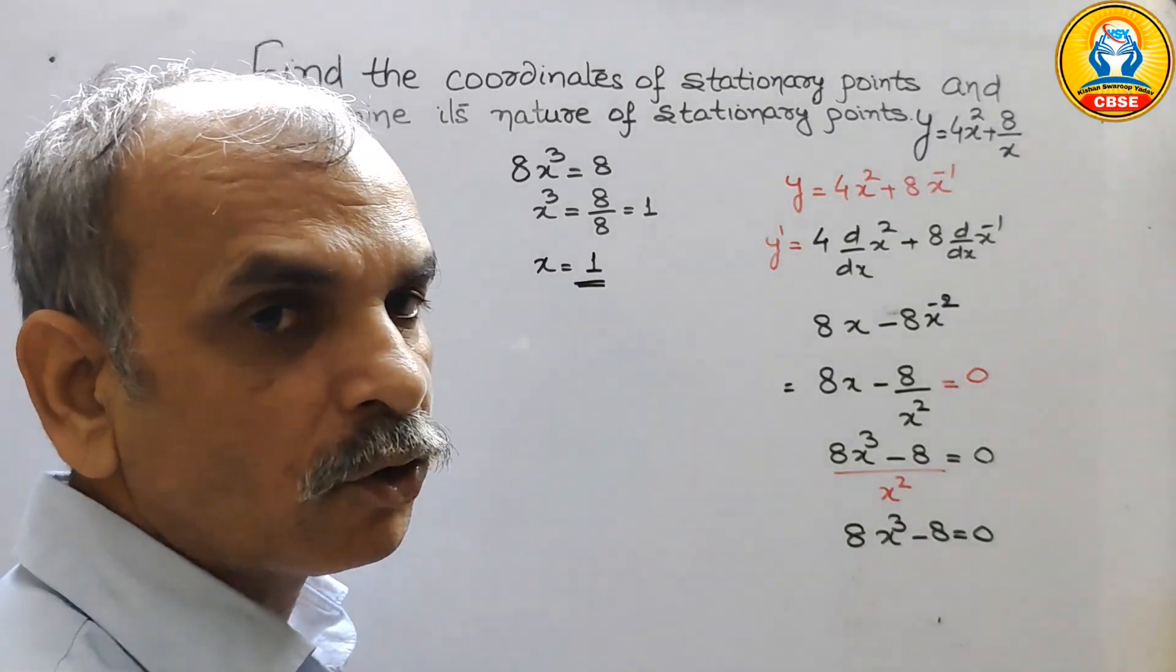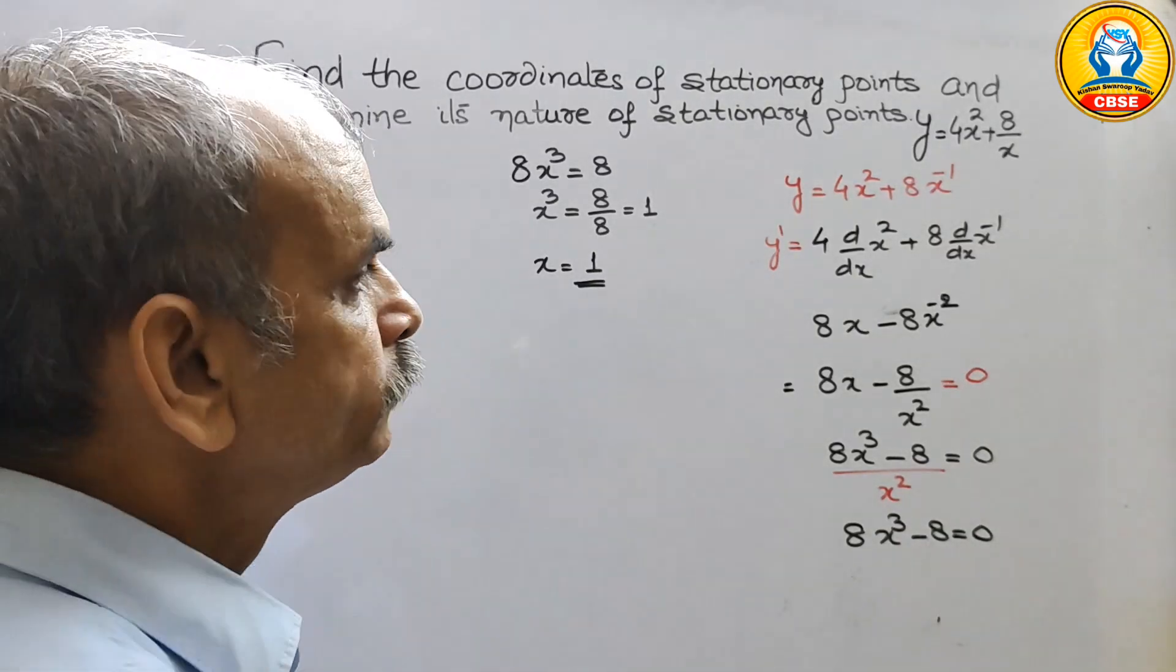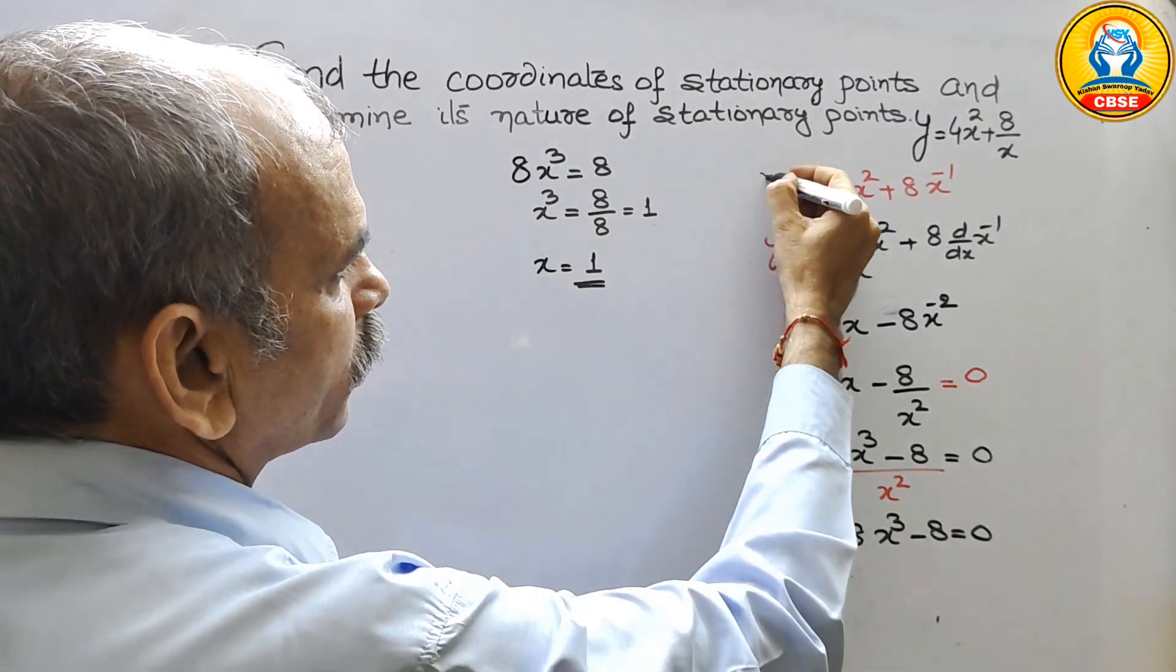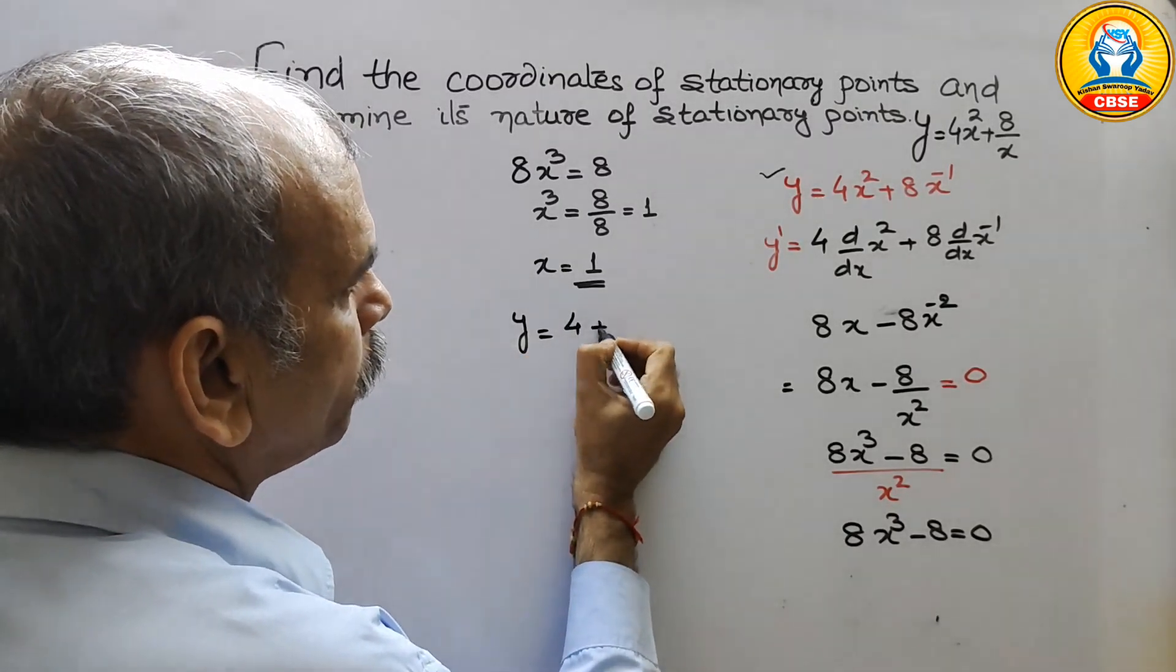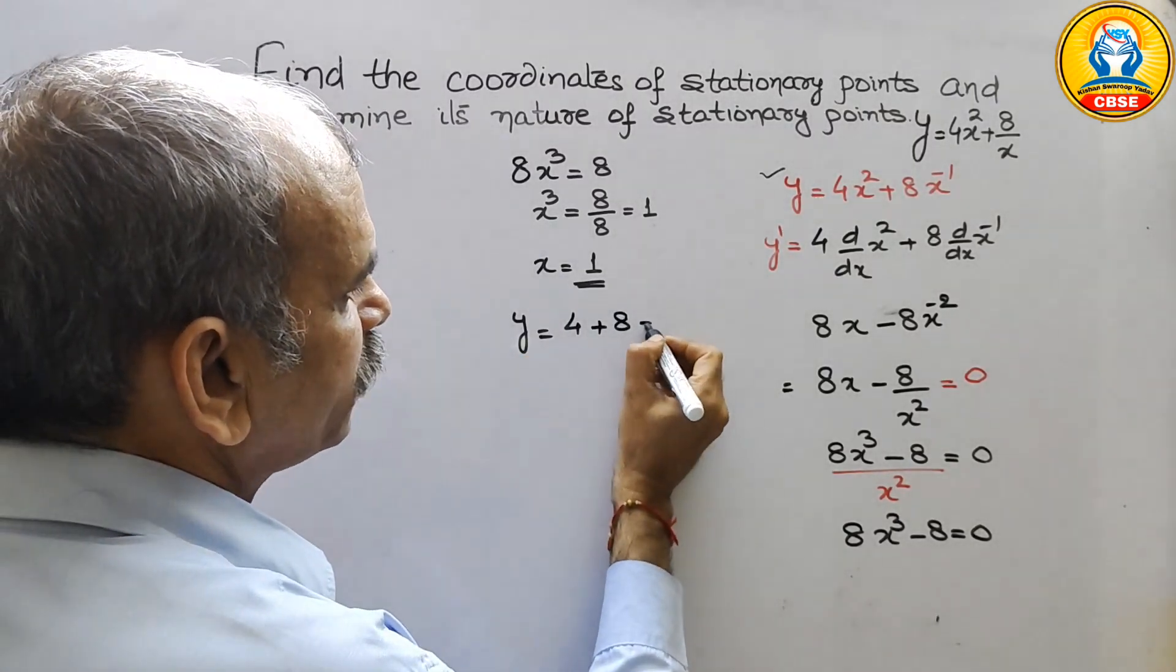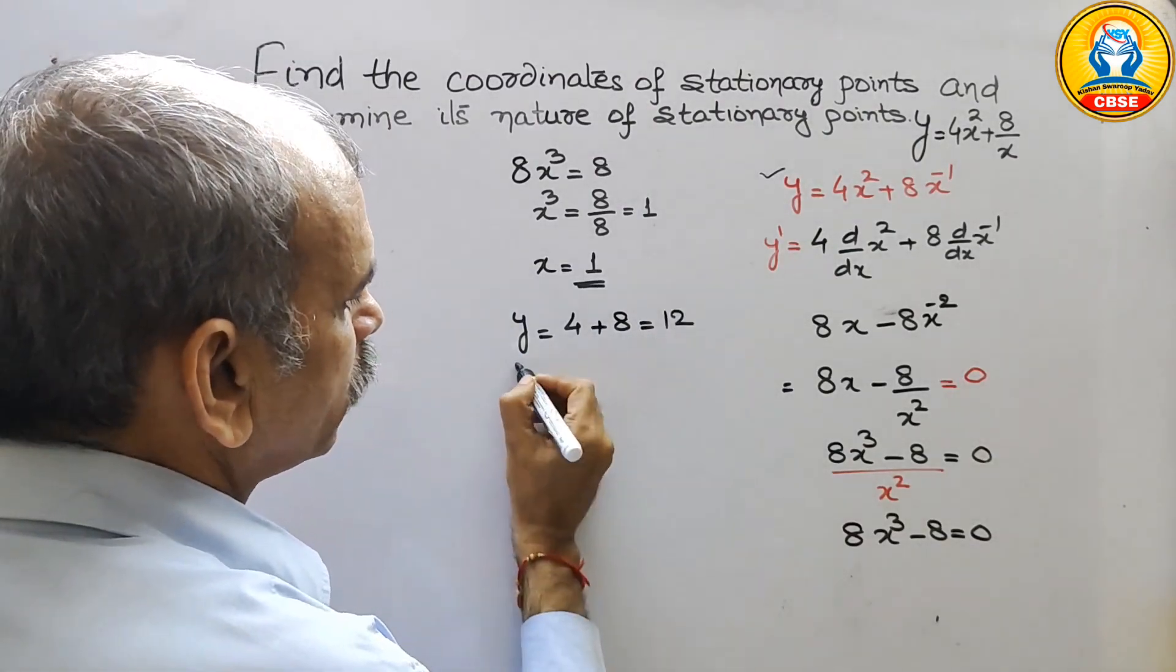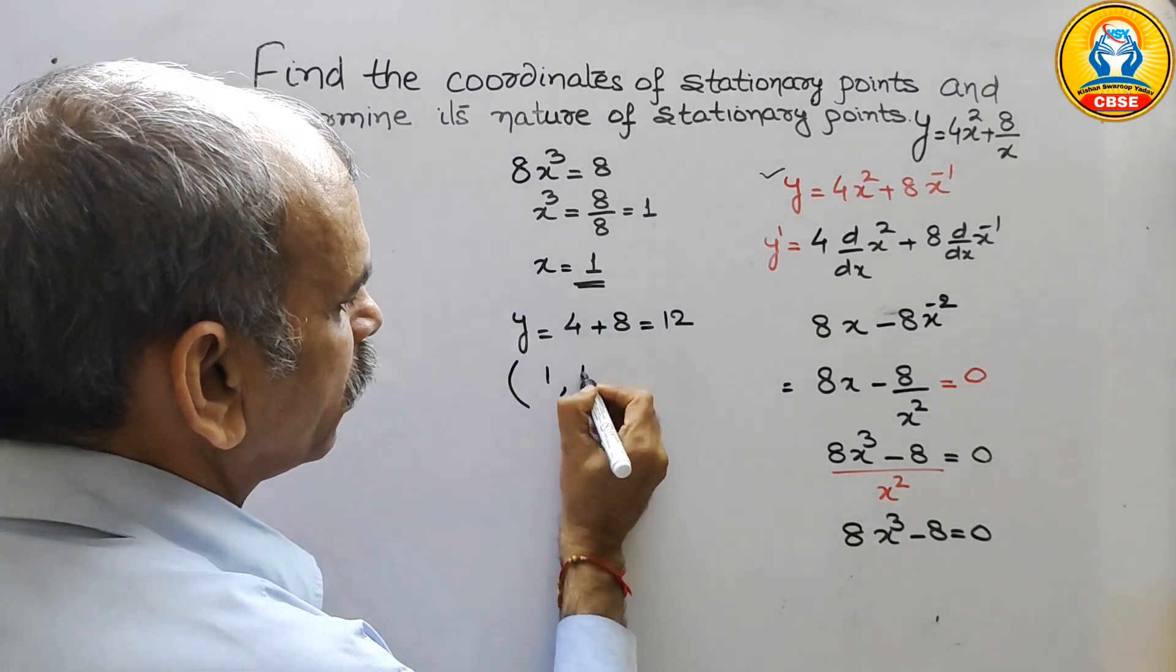Now we have to take out the value of y, substitute this value here. So we will get y is equal to 4 plus 8 that is equal to 12. So now your stationary point is 1 comma 12.